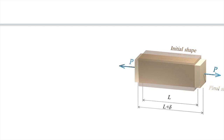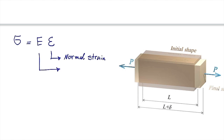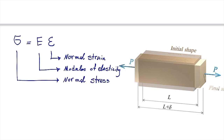First of all, let's start with the relationship between normal stress and normal strain. Sigma is equal to E multiplied by epsilon. Epsilon is normal strain, E is modulus of elasticity, and sigma is normal stress. The relationship between stress and strain is described by a constant number which is called modulus of elasticity.